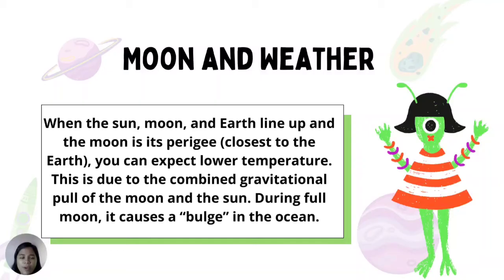Moon and Weather: When the sun, moon, and earth line up and the moon is at its perigee or closest to the earth, you can expect lower temperatures. This is due to the combined gravitational pull of the moon and the sun. During full moon, it causes a bulge in the sea.